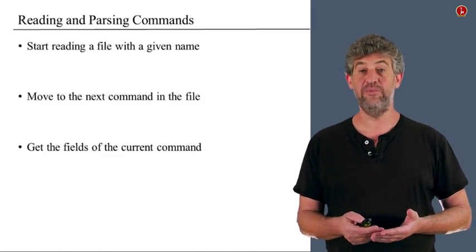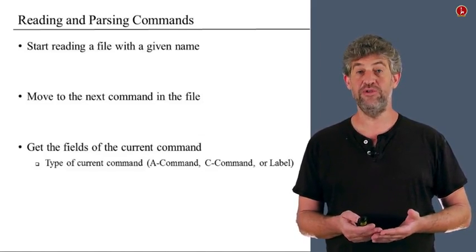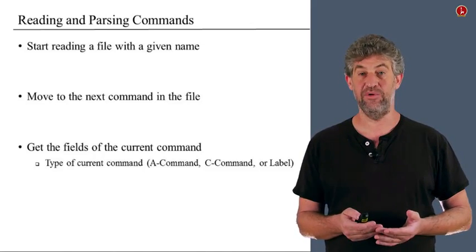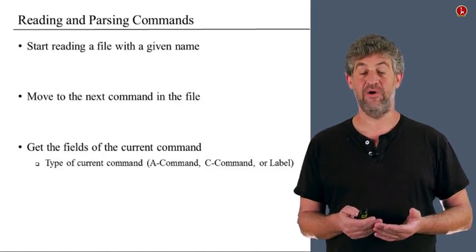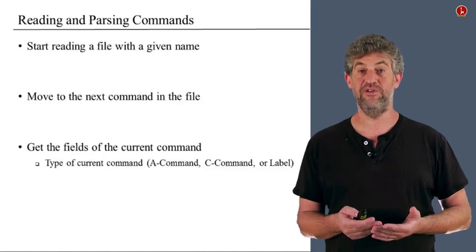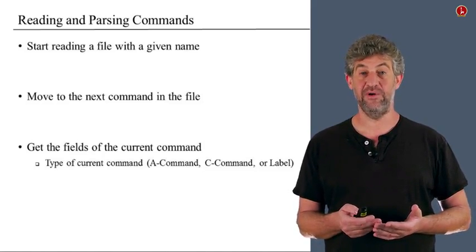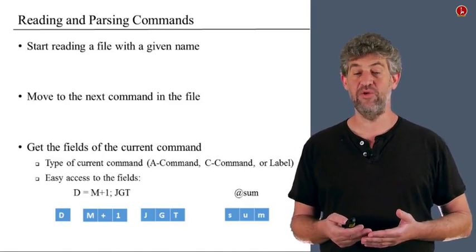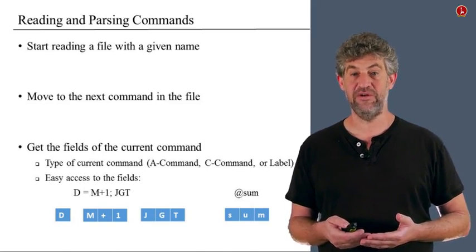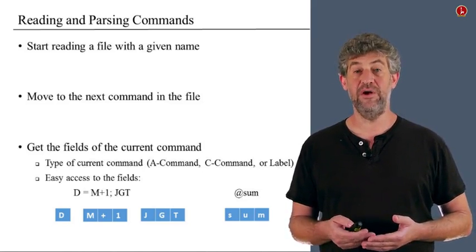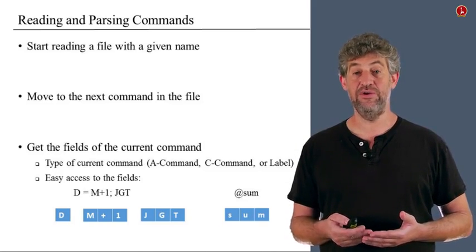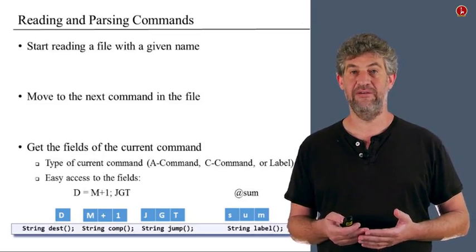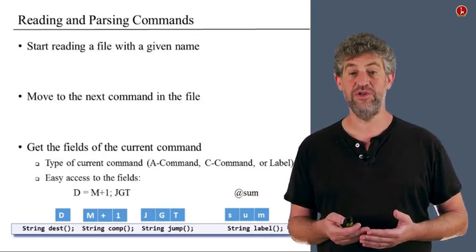Third, you need to break the command you've just read into its components. First, you need to know what kind of command it is. In our language, we have A commands and C commands. There are also pseudo commands that define labels — these are not translated to machine language, but our assembler needs to recognize them as label definitions. Once we know the command type, we want to give the rest of the program easy access to the different parts. An assignment command should give access to the destination, computation, and jump parts. For a label or A command, we provide access to the actual string, which may be a symbol or a number.